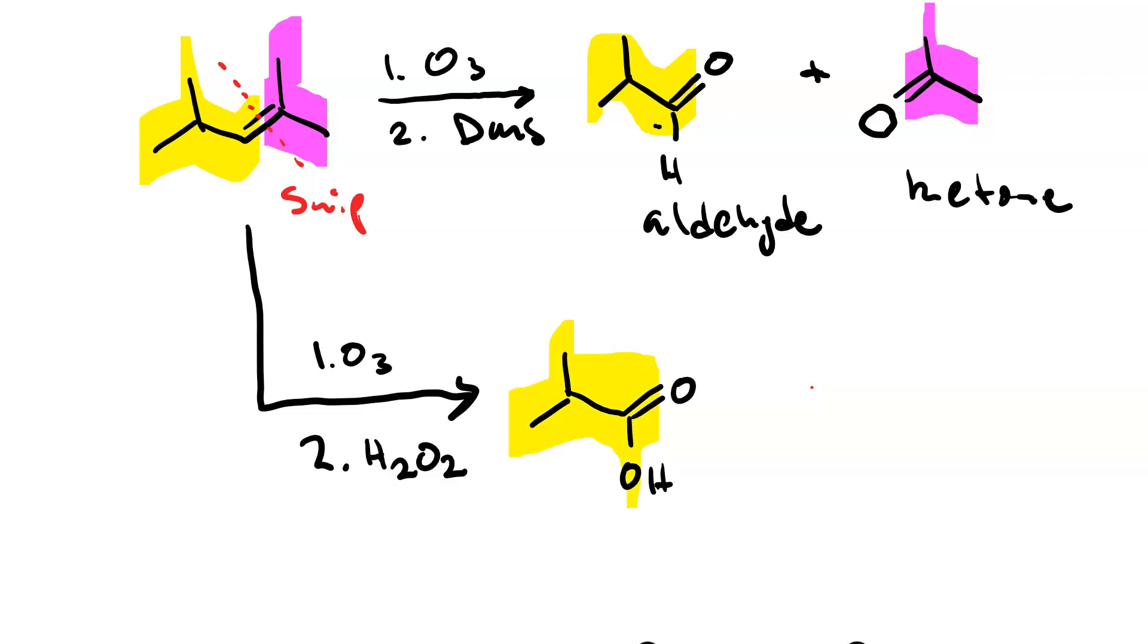The fragment on the left makes this carboxylic acid. However, the fragment on the right will still make the ketone because of the substitution of the alkene.